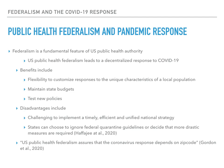State and local health officials are the final authority on what preventive measures to take within their jurisdiction, and states can choose to ignore federal quarantine guidelines or decide that more drastic measures are required. Hadjafi et al. in the New England Journal of Medicine pointed out that this legal framework has long afforded officials too much discretion with too few checks. Typically the concern is that officials will implement unduly coercive measures in response to public demands — for instance, during the 2014 Ebola outbreak, New Jersey's governor ordered a nurse returning from Sierra Leone into quarantine, although her case didn't merit it under CDC guidelines. Gordon et al. noted in JAMA that U.S. public health federalism assures that the coronavirus response depends on zip code.